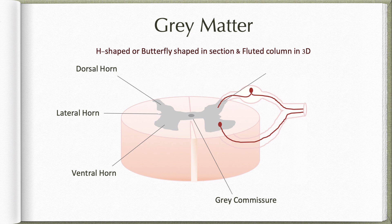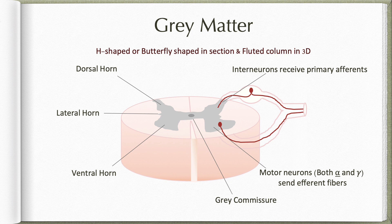Dorsal horn cells receive the primary afferents coming through the dorsal root. These either form interneurons or form cells which project the ascending tracts. The ventral horn is made up of predominantly motor neurons, both alpha and gamma types, and they send the efferent fibers through the ventral roots. The lateral horn is made up of visceromotor and viscerosensory neurons of both sympathetic as well as parasympathetic systems.